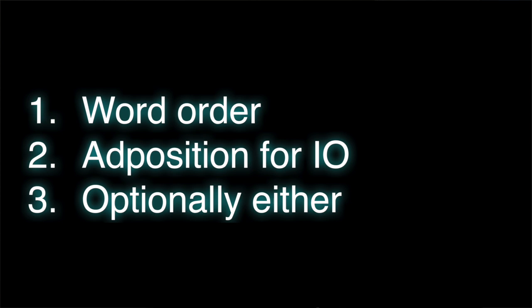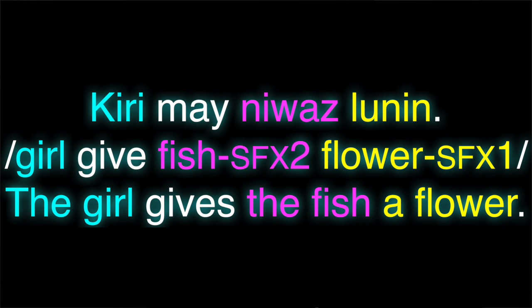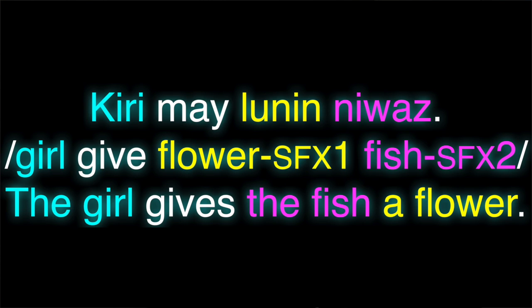Now, let's move on to things that are a little different from English. Next, we can do something a little like Latin, where we basically have three different cases to mark the three different roles. Our control sentence is 'Kiri tol niwaan' — we have an N suffix on the end of niwa meaning fish, and it's acting like an accusative suffix — this is 'the girl pats the fish.' Now for our ditransitive sentence, 'Kiri mai niwaz lunin' — here we have the introduction of a new suffix, the Z suffix, acting like a dative suffix, and the N suffix is still acting like the accusative suffix. Typically in a language like this, you can mix up the order, so 'Kiri mai lunin niwas' wouldn't mean anything different; it would still mean the girl gives a flower to the fish. But usually there's a preferred word order that is more natural.